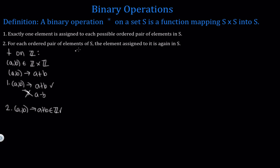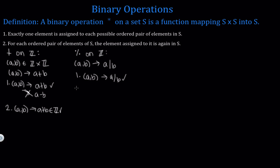Let's look at a different function. Let's try and see if division is a binary operation on the set of integers. This would map the ordered pair (a, b) to a divided by b. Condition one is satisfied because any element (a, b) gets mapped to a divided by b and it doesn't get mapped to any other element. Condition two tells us that (a, b) gets mapped to a divided by b and we need a divided by b to be an element again in the set of integers.